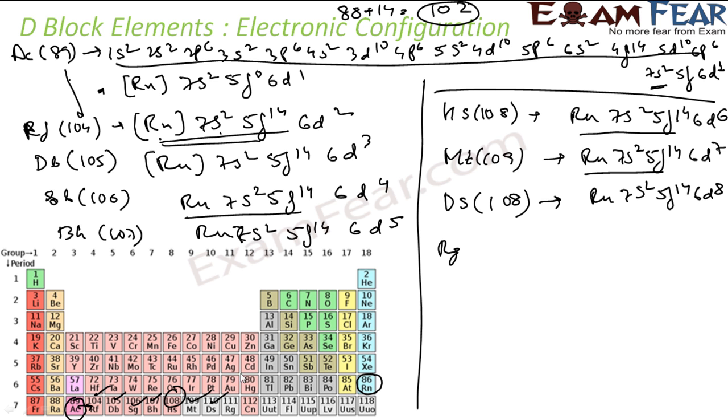Then we have Rg, this is Roentgenium, this is 111. Here you can see that there is a change. 5f14 6d should have 9 electrons, but if there is a transfer of electron from here, this becomes Rn 7s1 5f14 and 6d10. This is more stable, so there will be a transfer of electron.